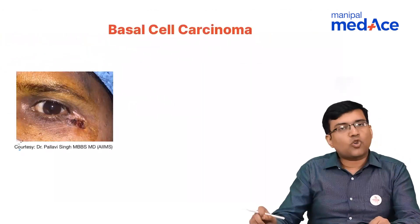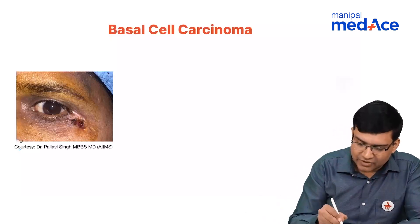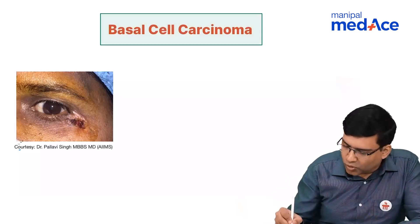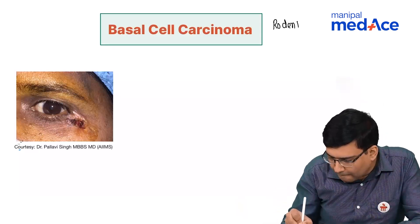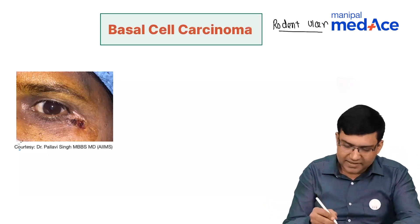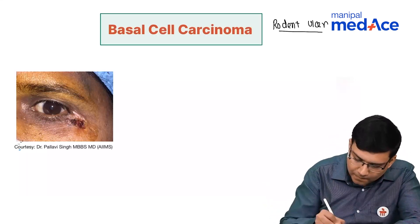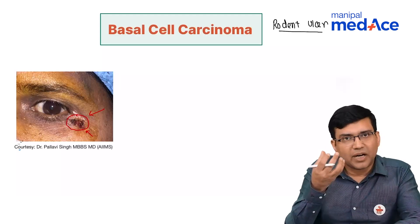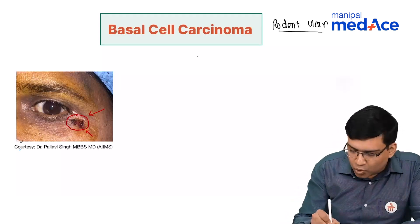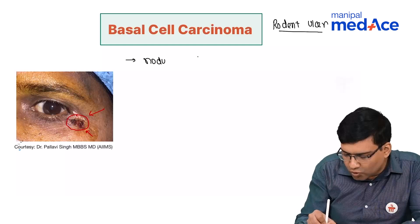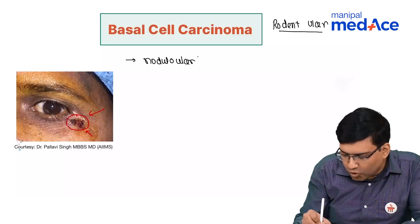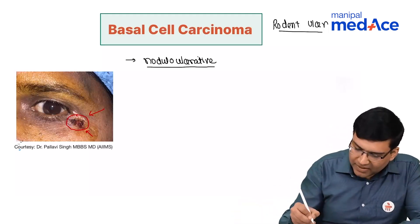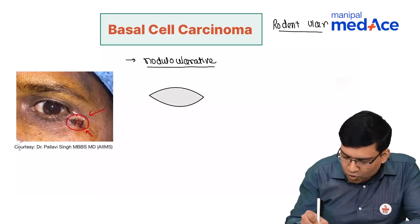The most commonly asked type of malignant lid tumor is basal cell carcinoma, also called rodent ulcer. As you can see in this picture, there is an excavating, nodulo-ulcerative type of lesion. The most common presentation is nodulo-ulcerative type.